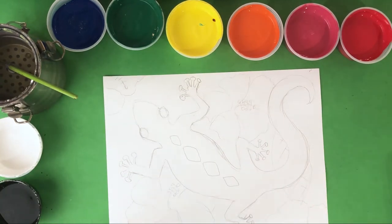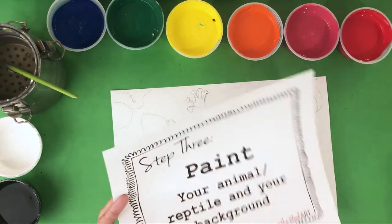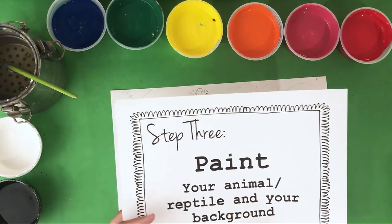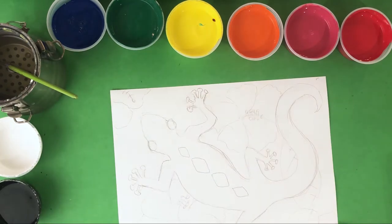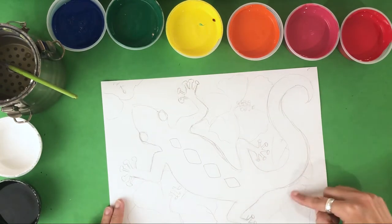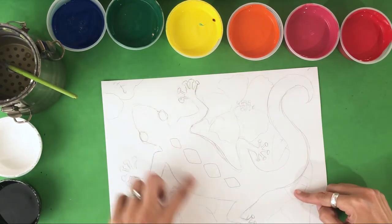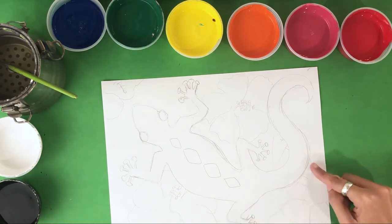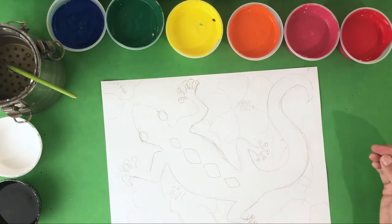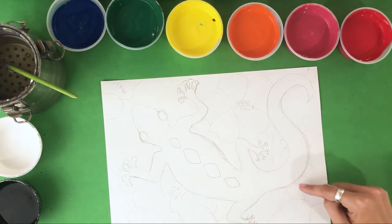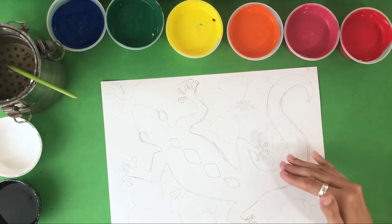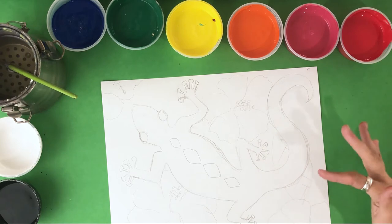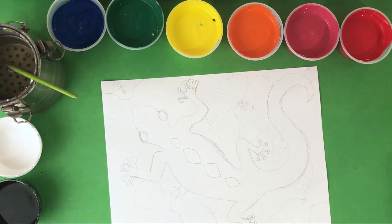My next step is step three, which is to paint my animal or reptile and then paint in the background. The main thing I want to be careful of is — I'm going to do my gecko in a green color, but I also have a green leaf nearby. You need to make sure that in places like that there's not the same type of green, or it will be hard to distinguish the gecko from its surroundings. So now I'll go ahead and paint everything in.